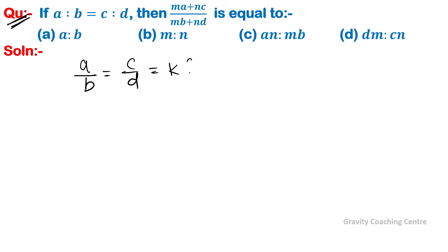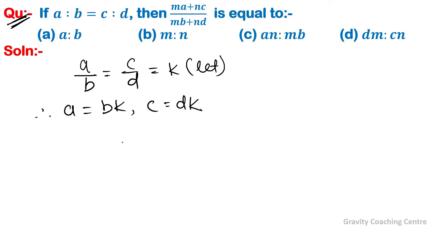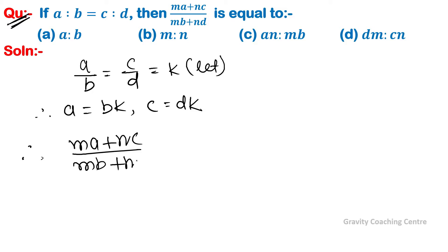Let a/b = c/d = k, therefore a = bk and c = dk. Now we evaluate (ma + nc) upon (mb + nd) by substituting the values of a and c.